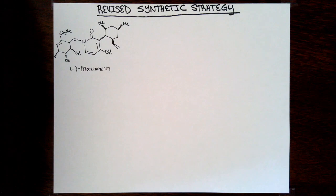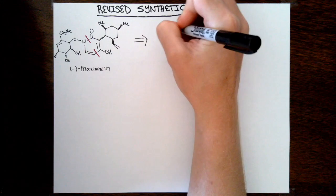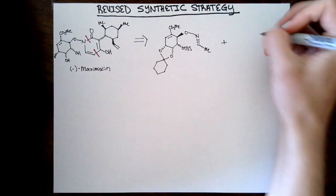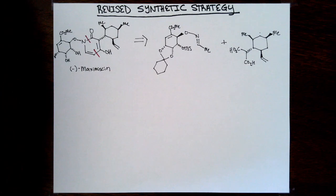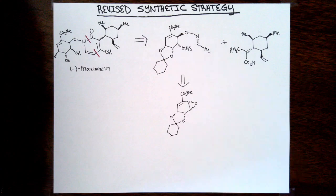Instead, they redefined their disconnection to do a late-stage synthesis of the pyridone heterocycle itself. Instead of starting with a pyridone and substituting it, they constructed the heterocycle core late-stage in their synthesis. This led to a much more convergent approach than they were initially planning.